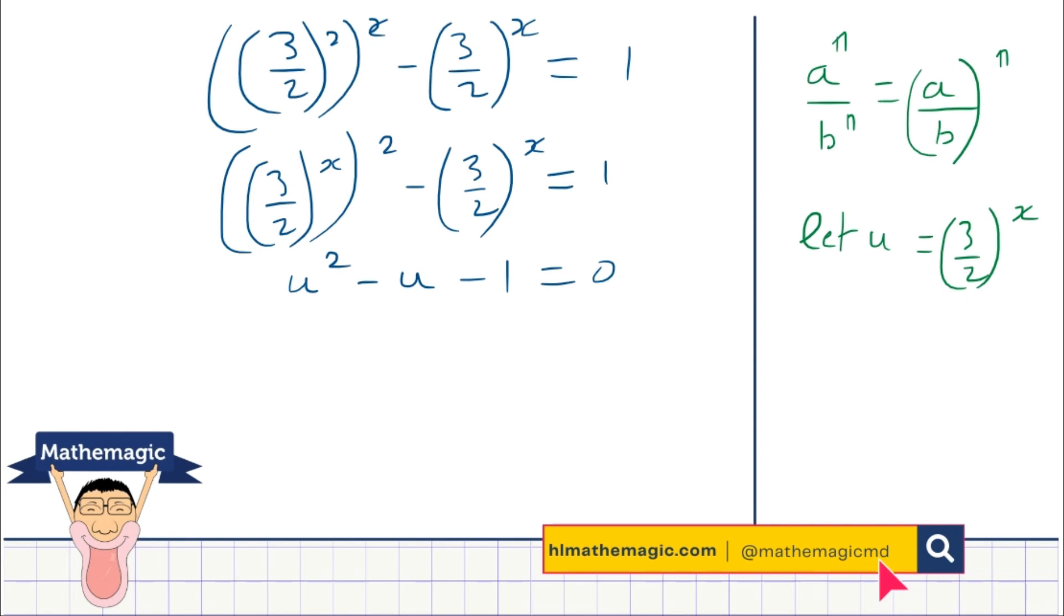This is a quadratic that's not easily simplified, and so I would suggest here that you use the quadratic formula. We can start with finding the discriminant, which is delta equals b squared minus 4ac. And here in this case, a is 1, b is negative 1, and c is equal to negative 1.